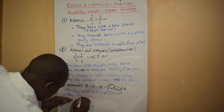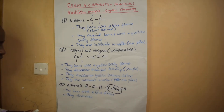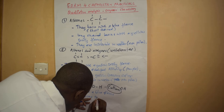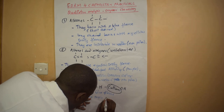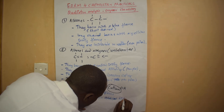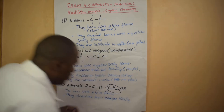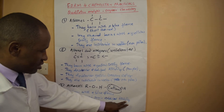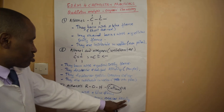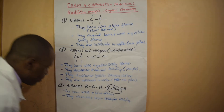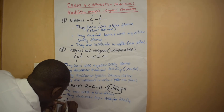As far as reagents are concerned, alkanols will decolorize purple acidified potassium permanganate (KMnO4).